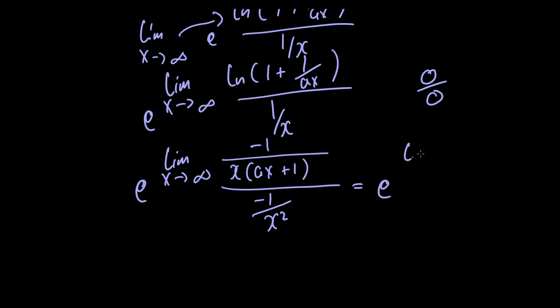This simplifies to e raised to the limit as x approaches infinity of x squared divided by x multiplied by a times x plus 1. All we've done here is multiply x squared by minus 1 and x times a times x plus 1 by minus 1 down here and this is what we're left with.